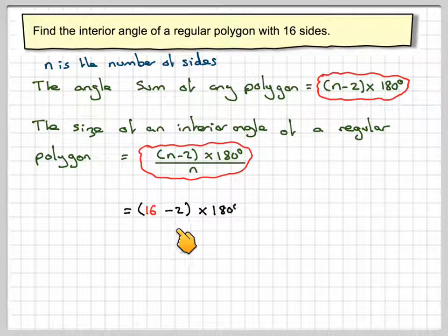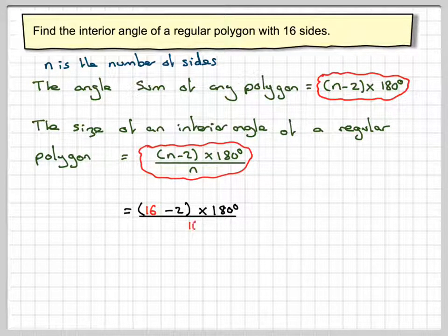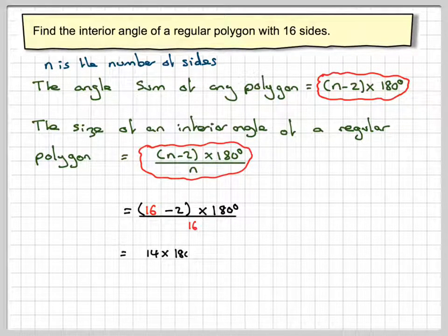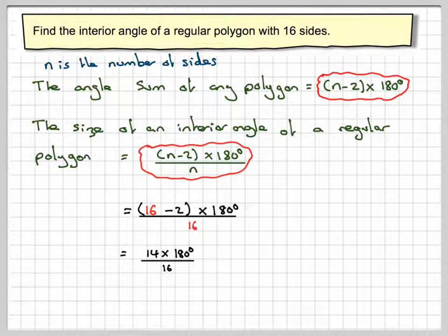So in this case, that's going to be 16 minus 2 times 180 divided by 16, which gives you 14 times 180 divided by 16, which is 157.5 degrees.